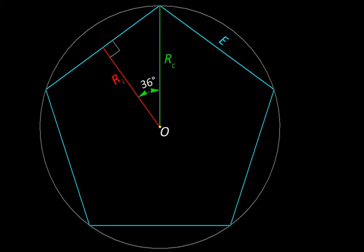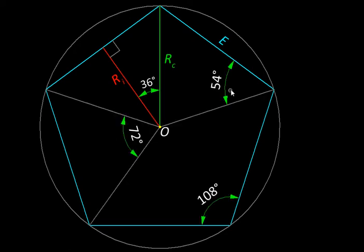Some other angles that might help us are marked here: 54, 72, 108, and so on. All of them happen to be multiples of 18. Maybe we can use this fact to form an equation and come up with an analytical expression for the trigonometric ratios.